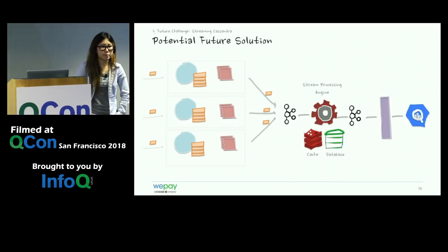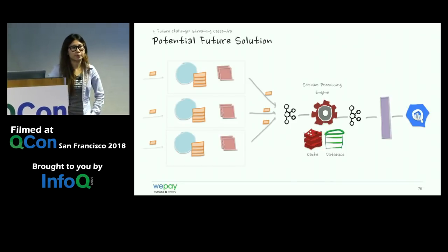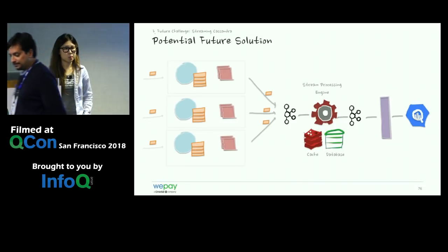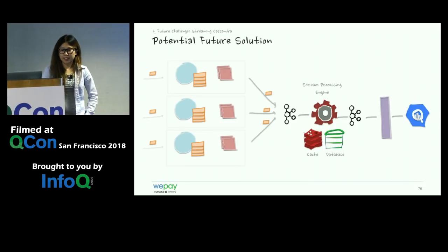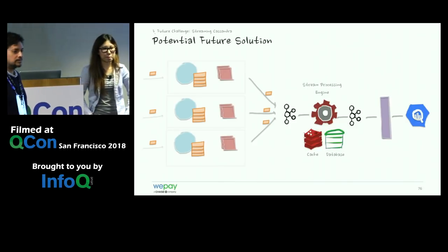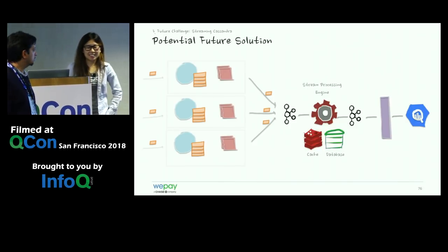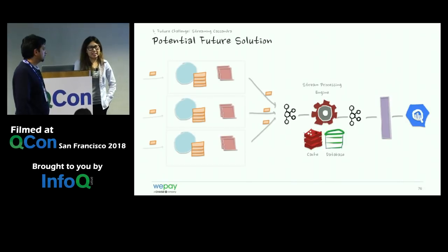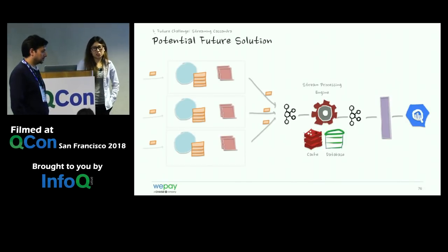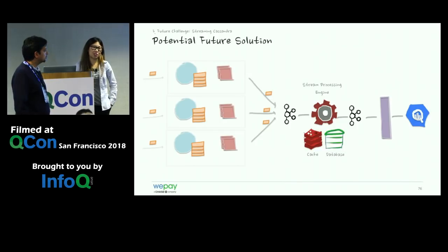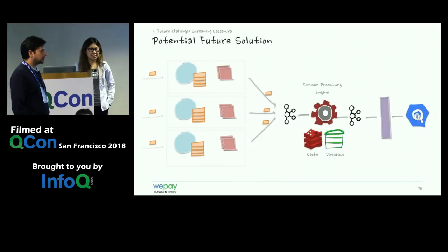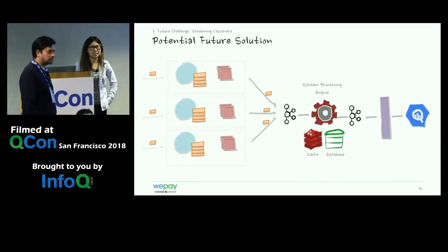Question about the cache in the future solution: how do you know how long to keep data in cache before expiring it? The cache is an optimization, not a source of truth. If you set a TTL of 30 minutes but a node is down longer, you might get data later — but the database can catch those problems when the data eventually arrives.